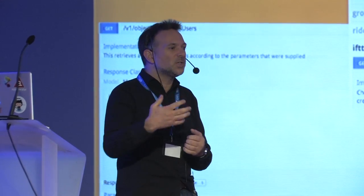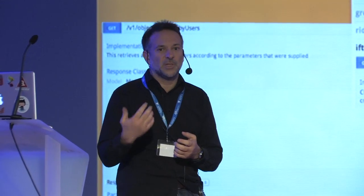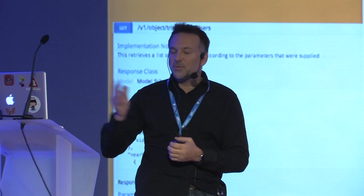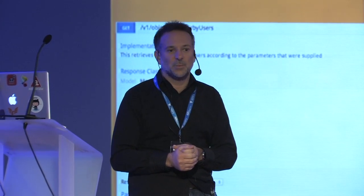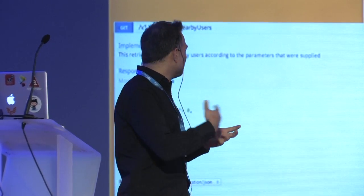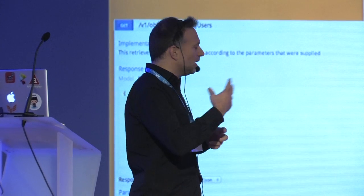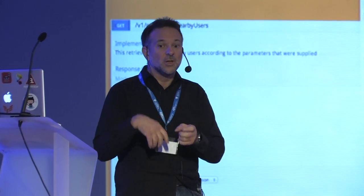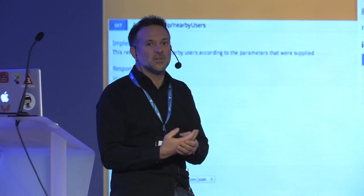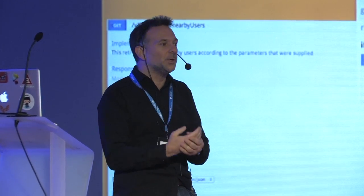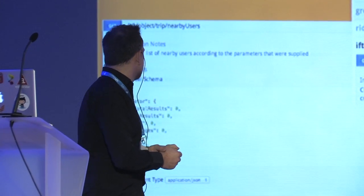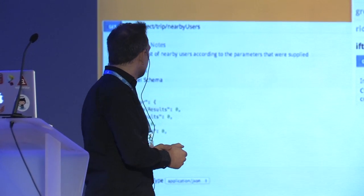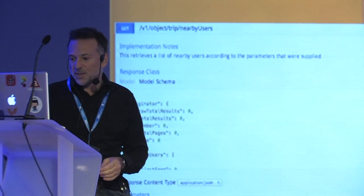We have a very extensive API documentation website at api.car.ma. We use Swagger for the documentation — it's a fantastic tool that gives you an interactive documentation page where you can actually call APIs directly. You can expand sections, fill in parameters, call the API, and even authenticate through the documentation page. I'm going to try to show how to call a couple of APIs at the end of my presentation.